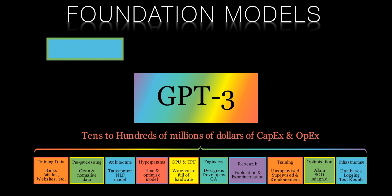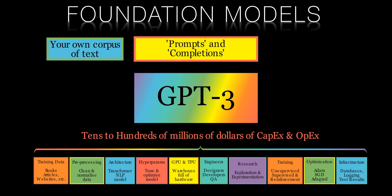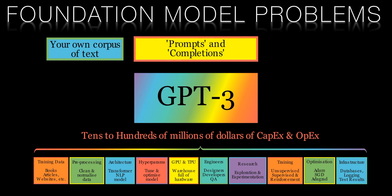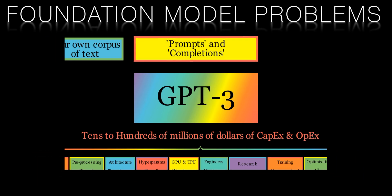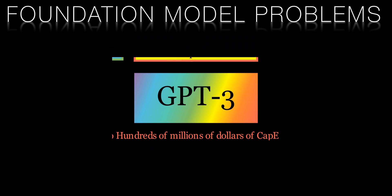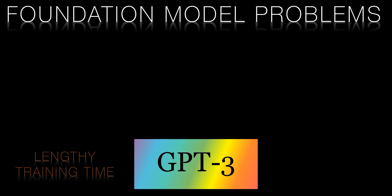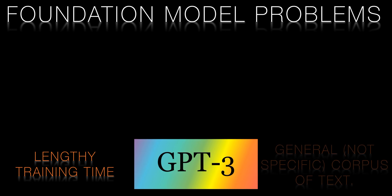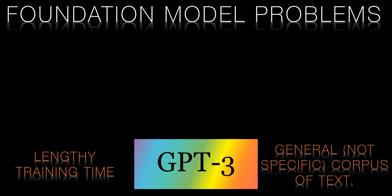This saves time and resources, making it easier to develop AI applications and bring new products to market. These large language models like OpenAI's ChatGPT and Google's Bard take days, weeks, and months to train. They're trained on a general corpus of text across the whole internet.